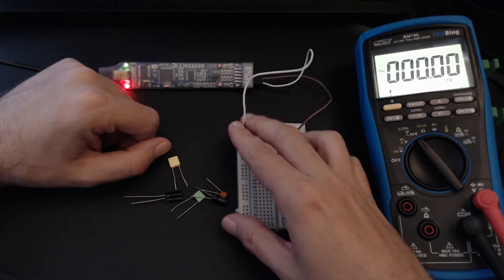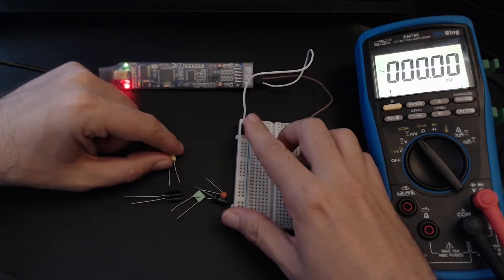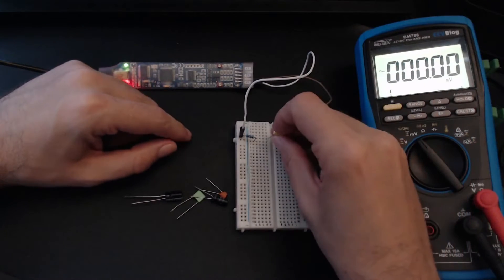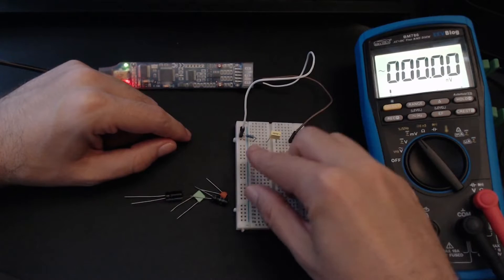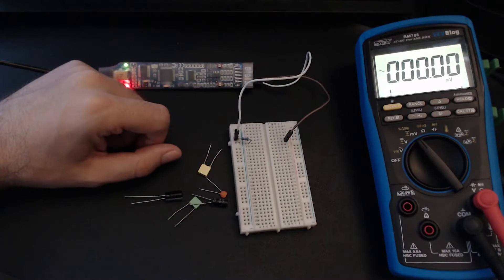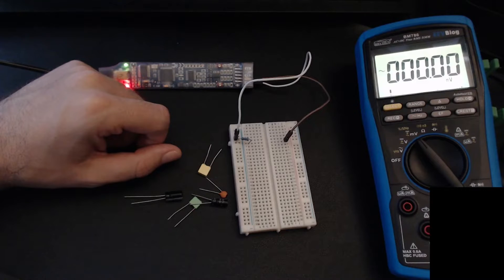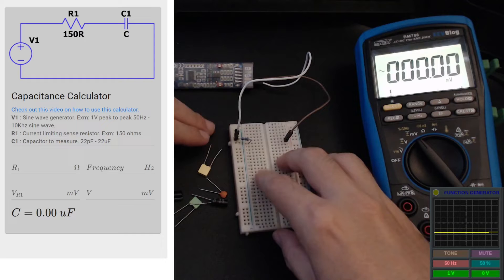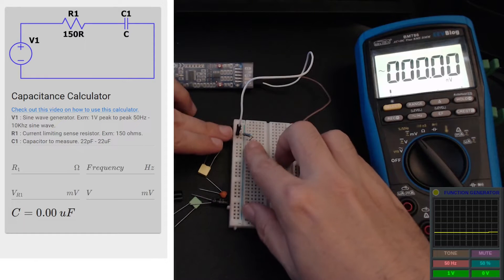The circuit that we'll use is like can't get simpler than that - we just have a 150 ohm resistor connected to our signal generator and we'll connect the cap, whatever we want to measure, in series with that resistor, get some measurements. Now let me pop the web app and our signal generator interface on the screen.